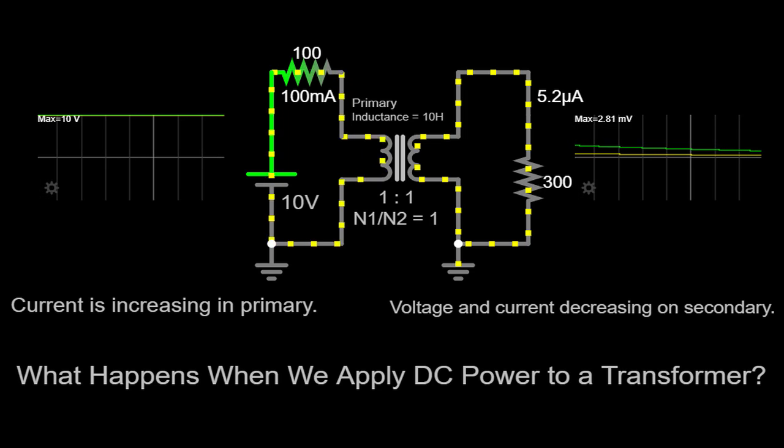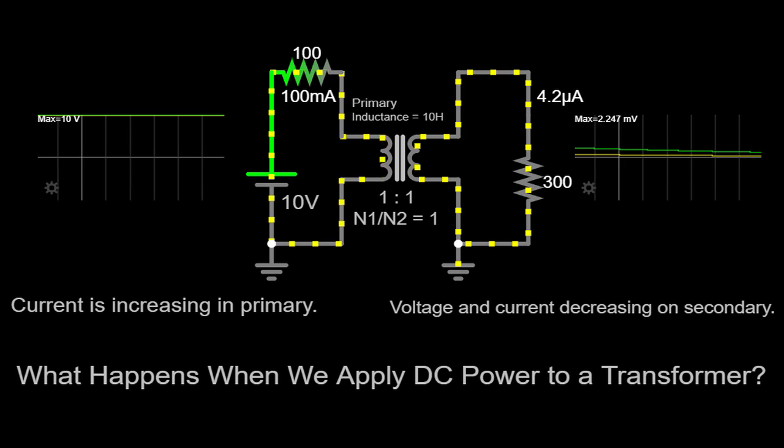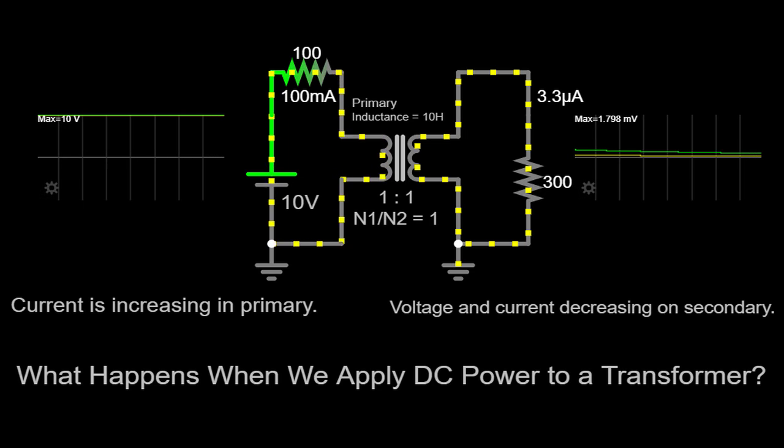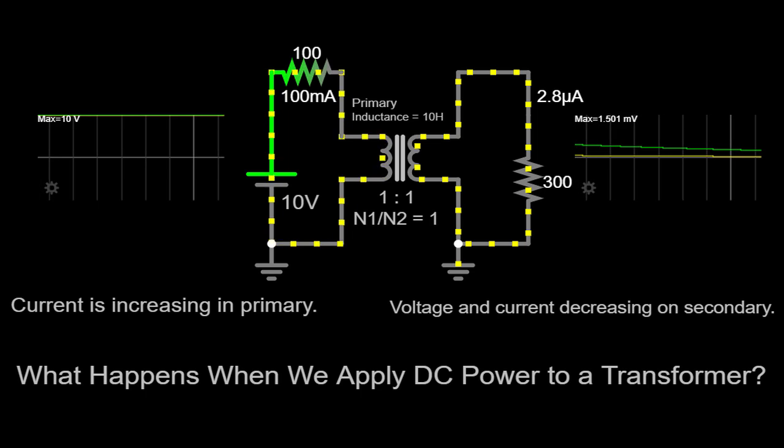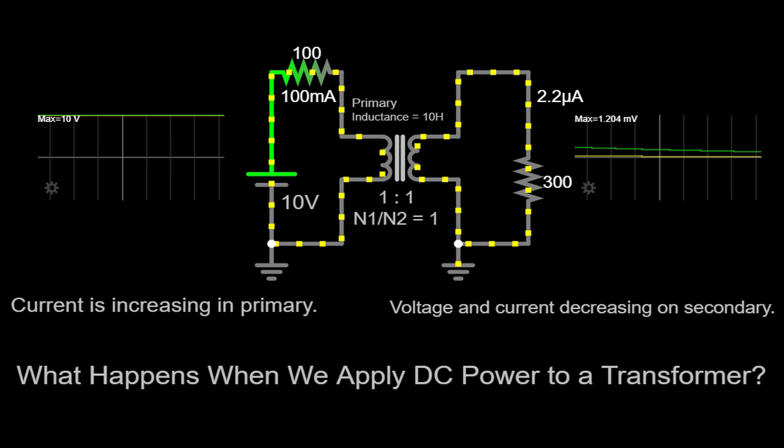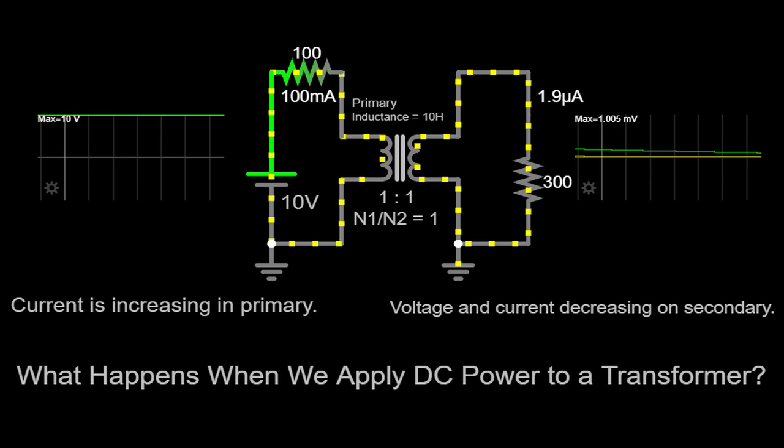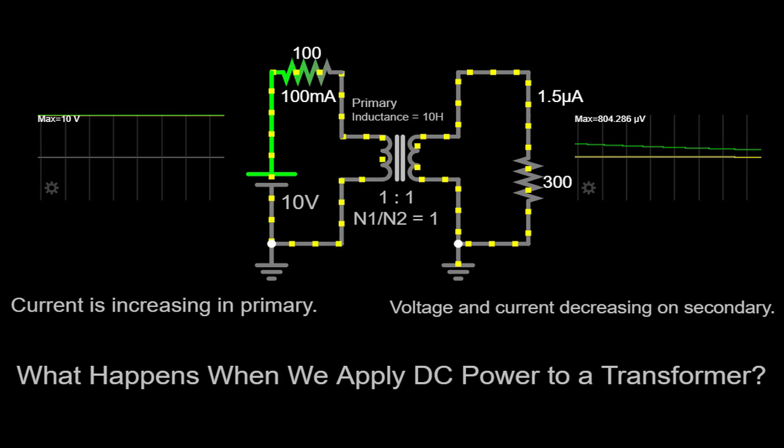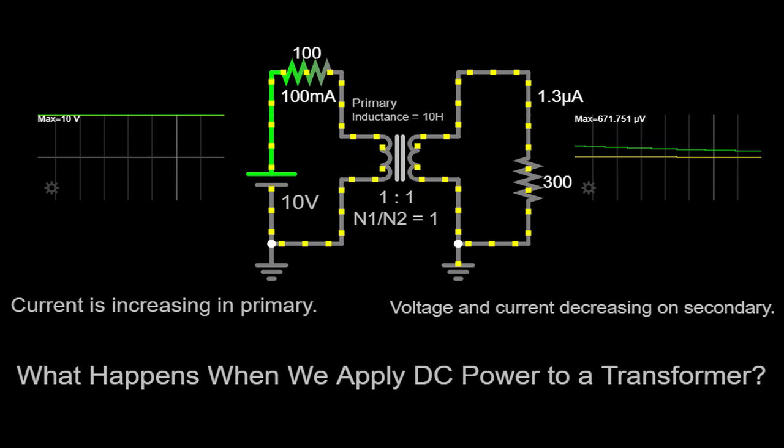When it comes to DC power, specialized transformers called DC-to-DC converters are used to convert one DC voltage level to another. These converters employ different principles, such as switching circuits or pulse-width modulation, to achieve the desired voltage transformation. DC-to-DC converters are widely used in various applications, including renewable energy systems, battery charging, electric vehicles, and telecommunications. They play a crucial role in ensuring efficient power conversion and distribution in DC-based systems.